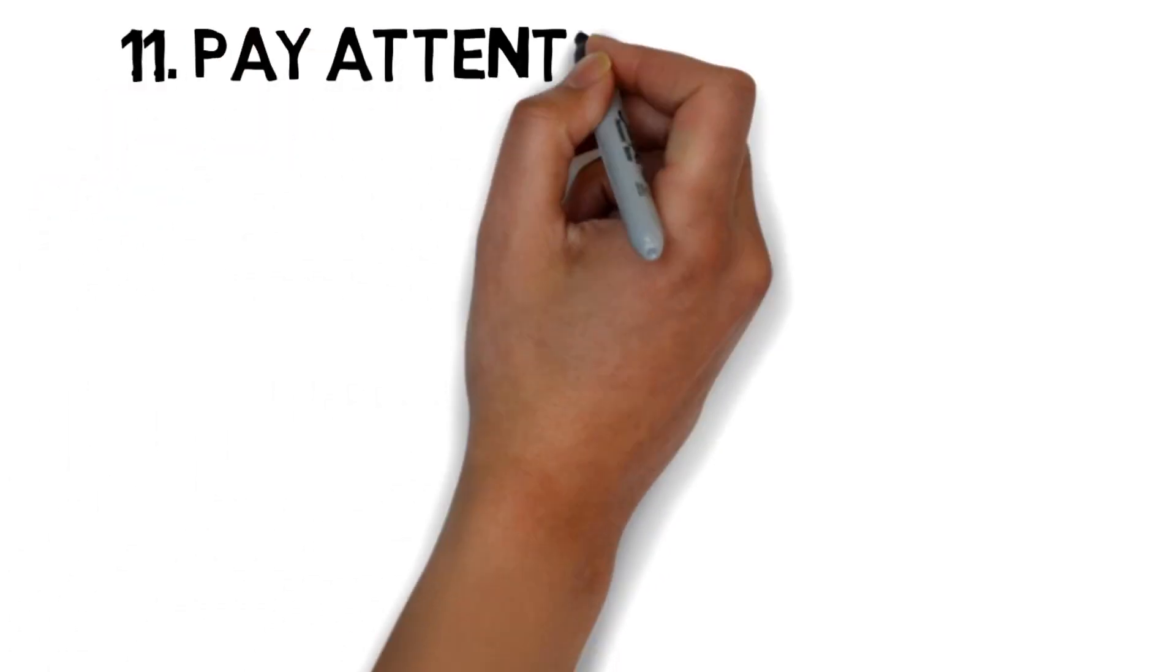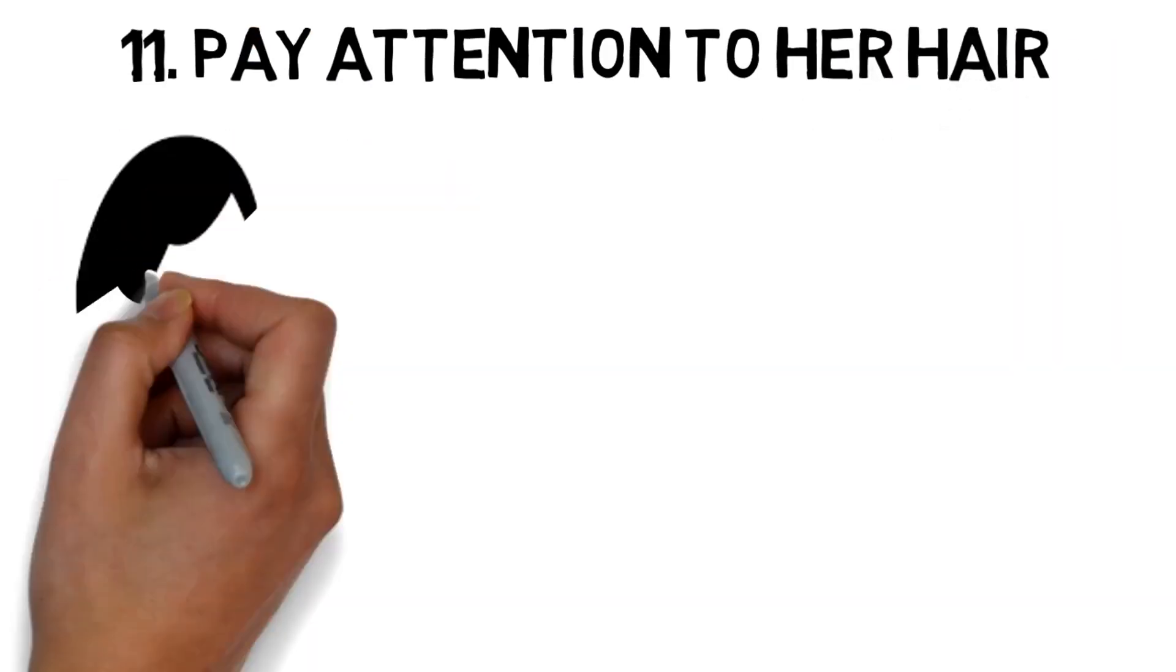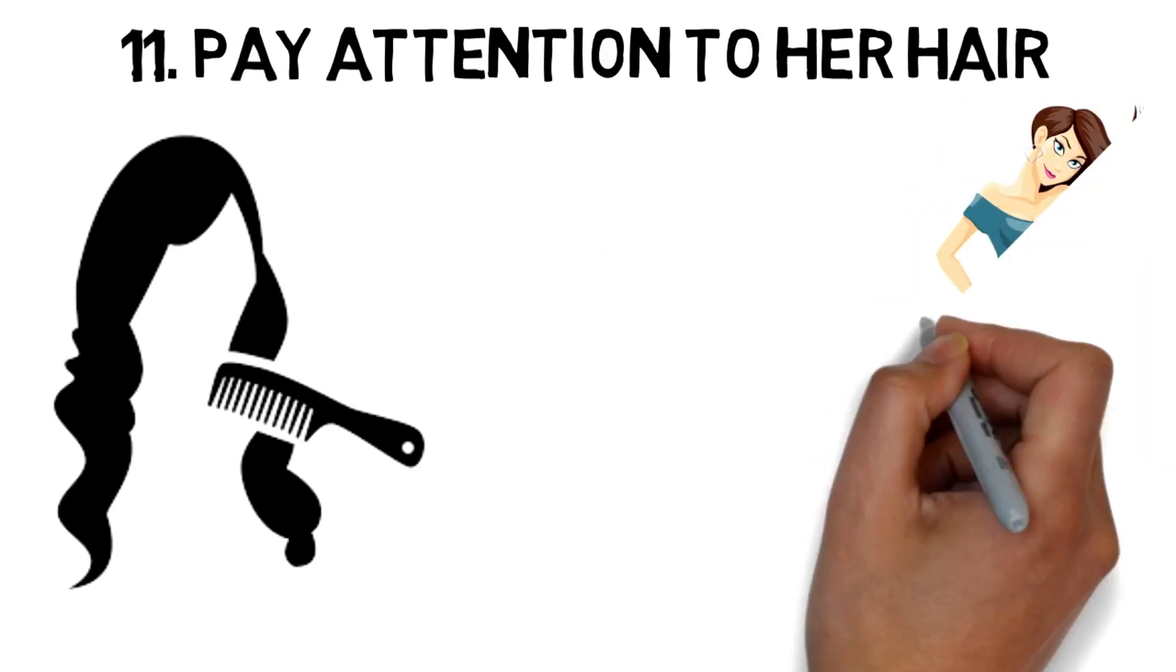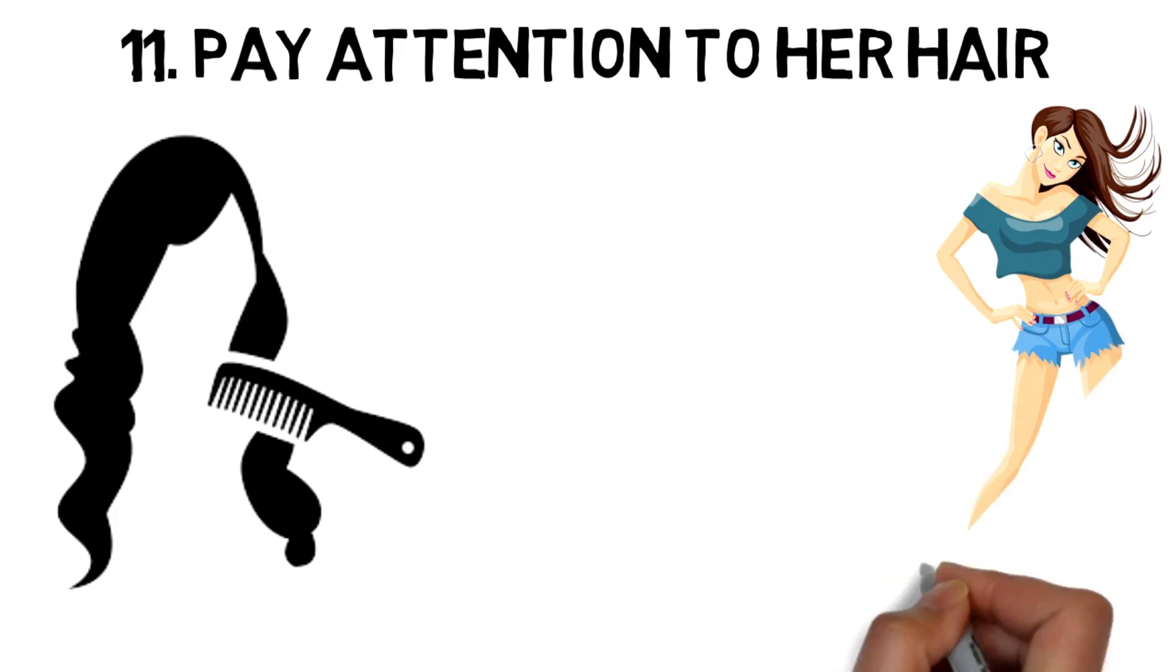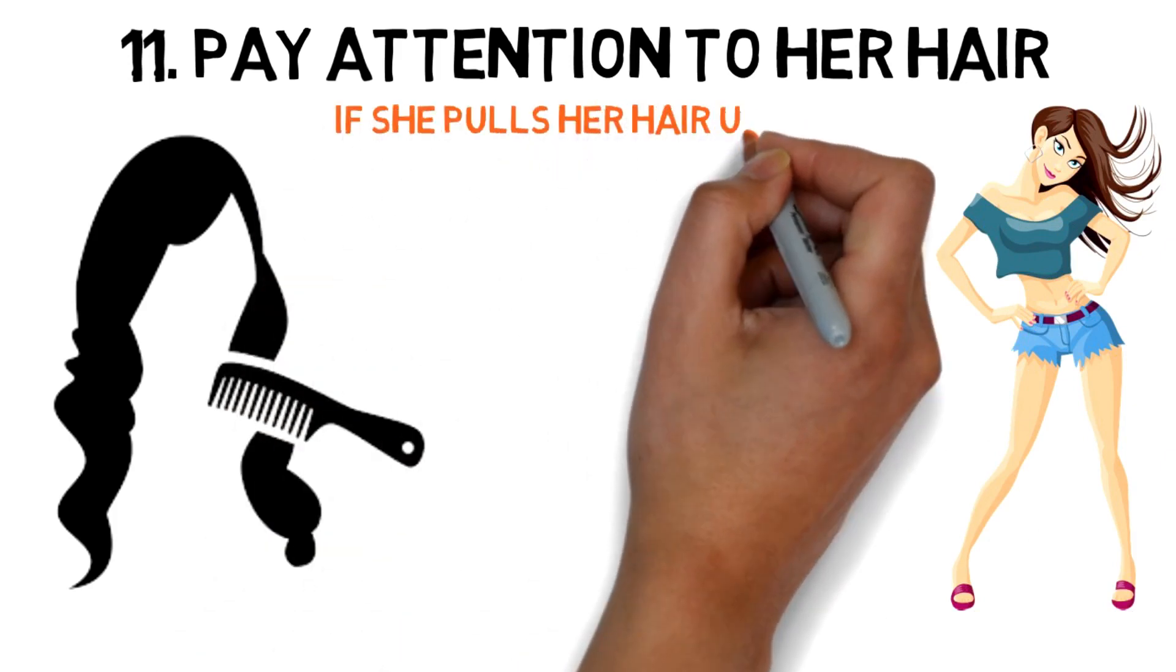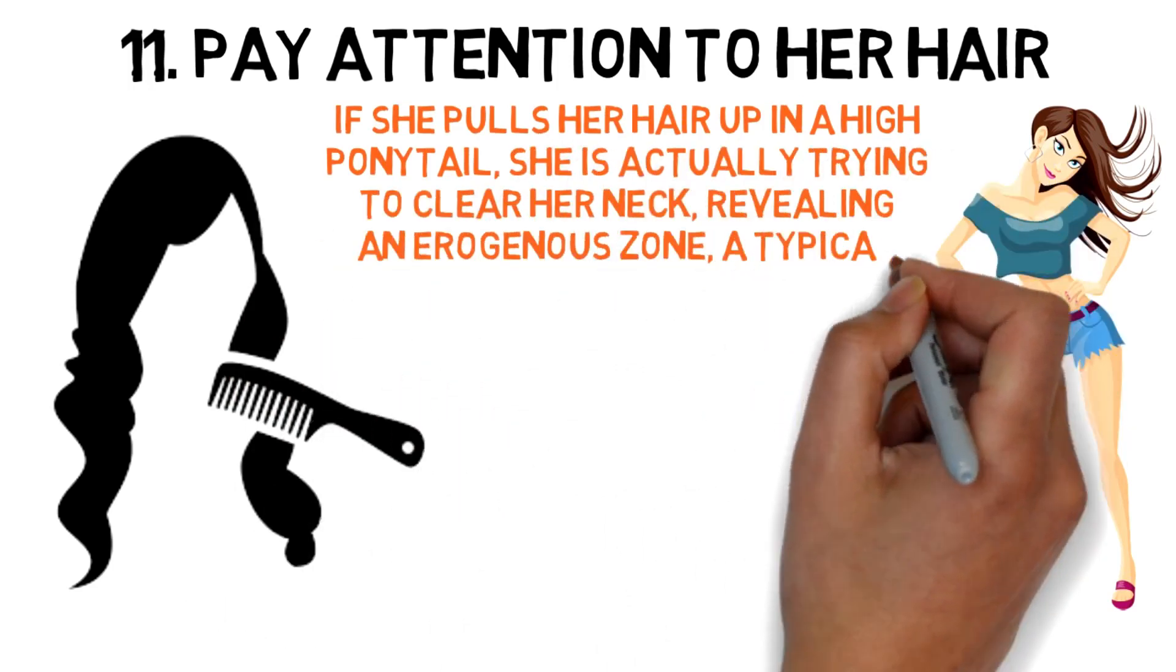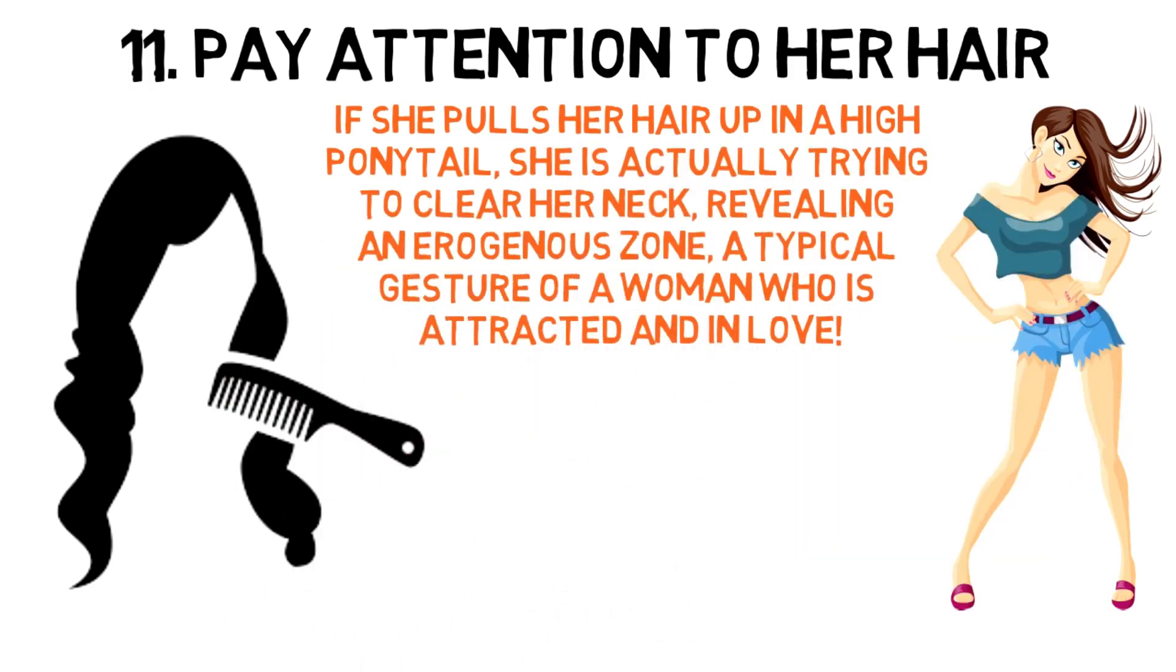11. Pay attention to her hair. Symbolically, hair reflects femininity and is also known to be a particularly sensual feature. Therefore, when a woman is attracted, she will automatically tend to play with her hair consciously or unconsciously. A woman who puts her hand through her hair when talking to you, for example, is trying to look attractive. If she pulls her hair up in a high ponytail, she is actually trying to clear her neck, revealing an erogenous zone, a typical gesture of a woman who is attracted and in love.